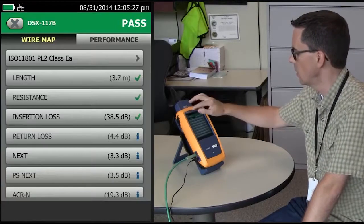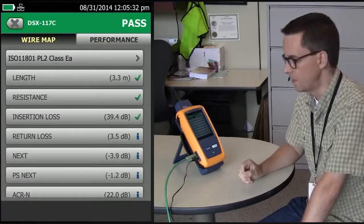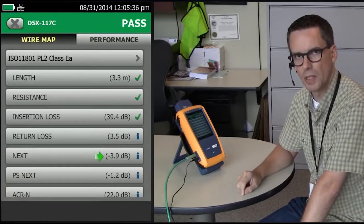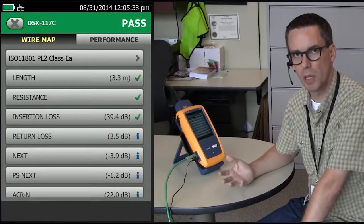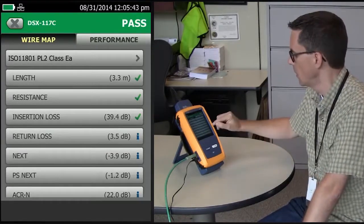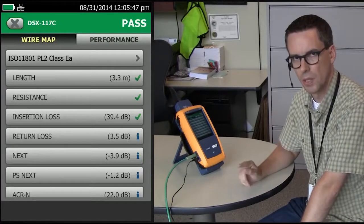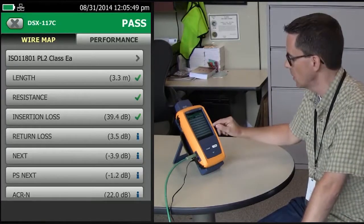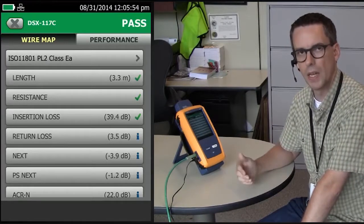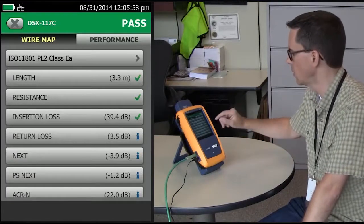Now there is another interesting quirk. Let's look at this result here. The margin is minus 3.9 dB for near-end crosstalk, so that should be a fail, correct? Because minus is below the test limit. But the DSX is showing an eye next to it, not an X. Why? Because the insertion loss on this particular link, quite short at 3.3 meters, never actually reached 4 dB.